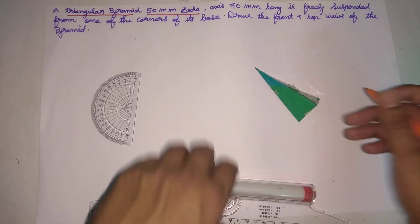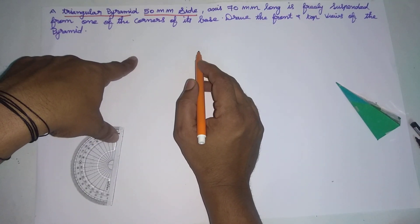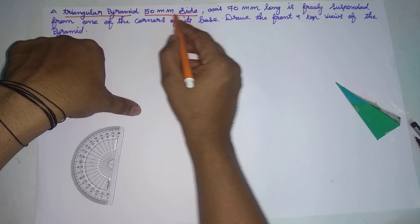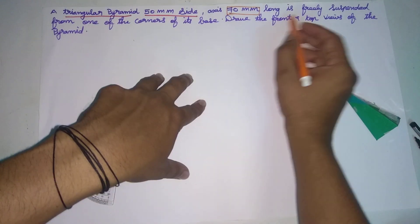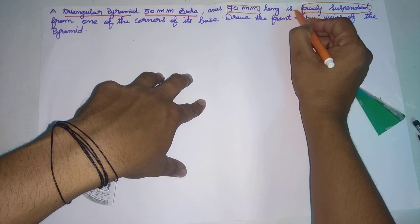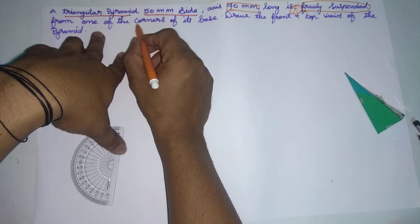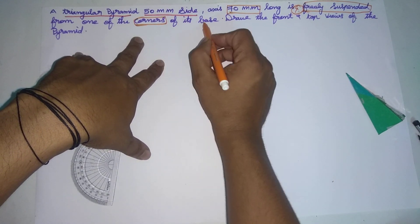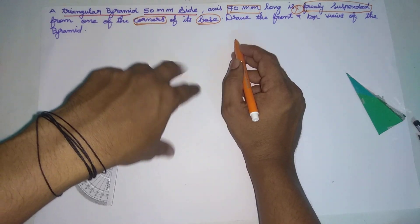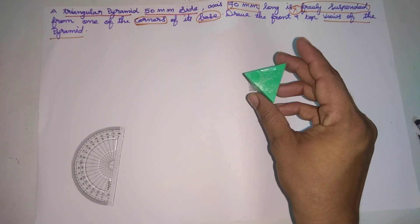Hi friends, welcome. The problem is a triangular prism with a 50mm side and an axis length of 70mm. It is freely suspended from one of the corners. The base is suspended from the front. This is the front view and top view of the triangular prism.